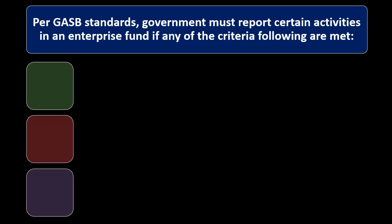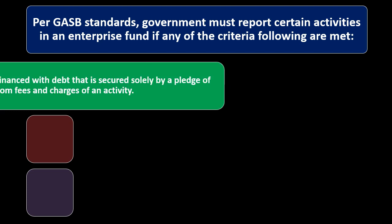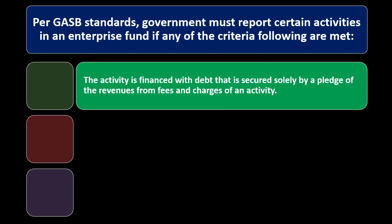Per GASB standards, a government must report certain activities in an enterprise fund if any of the following criteria are met. The first criteria: the activity is financed with debt that is secured solely by a pledge of the revenues from fees and charges of an activity.